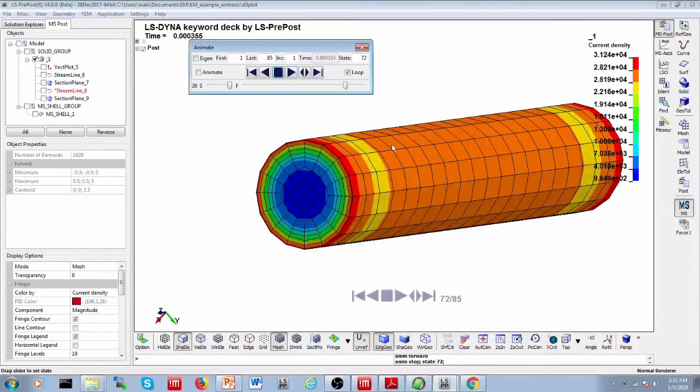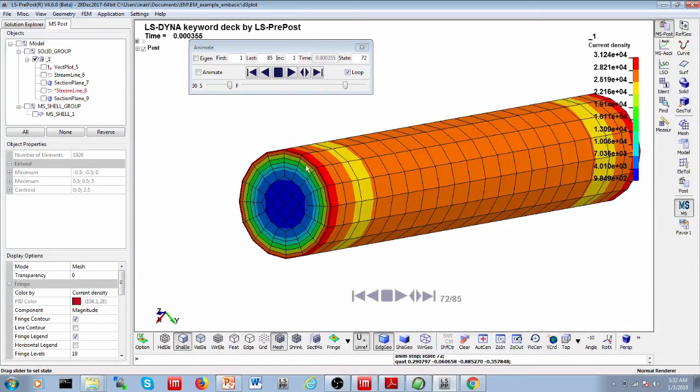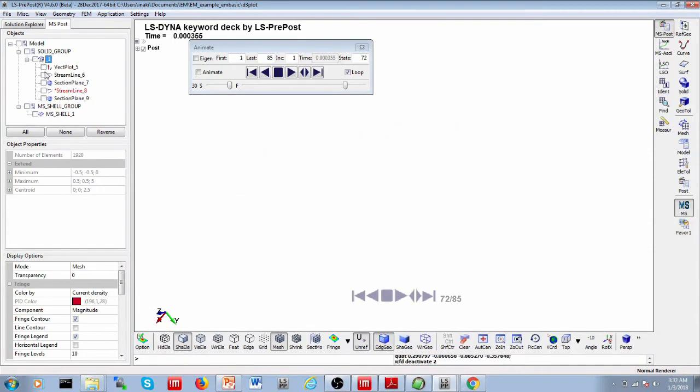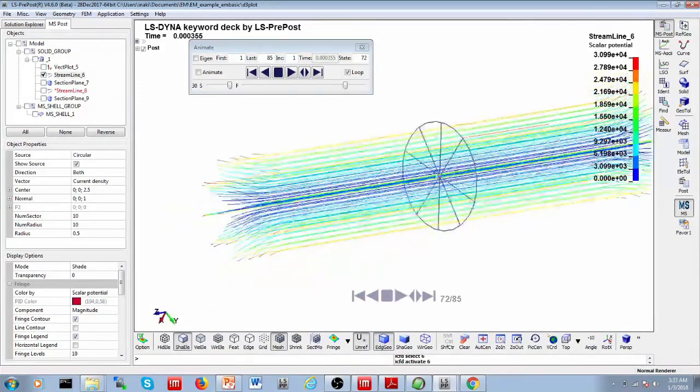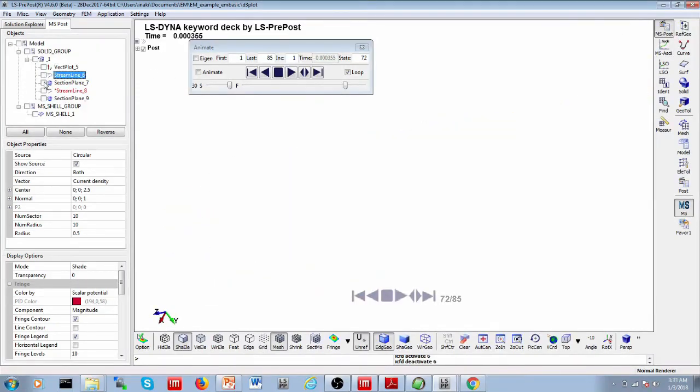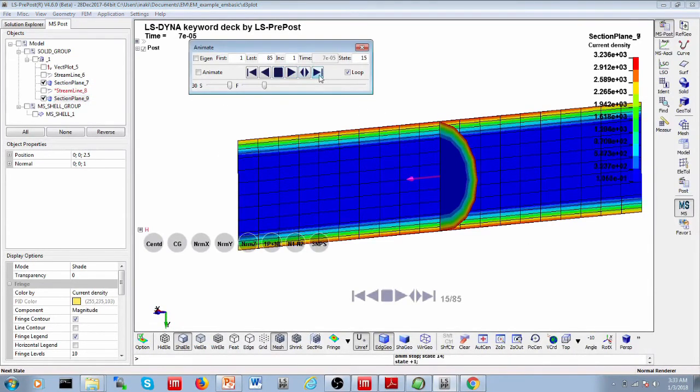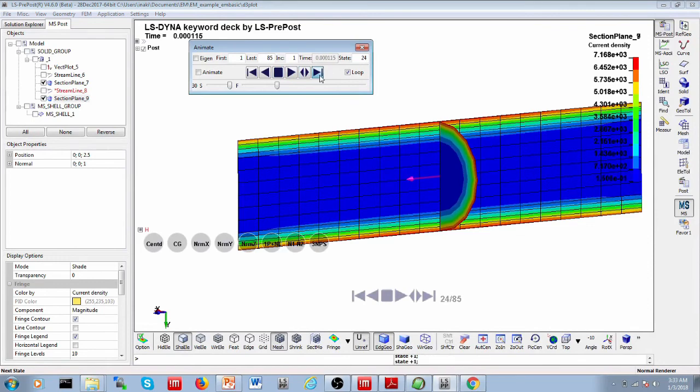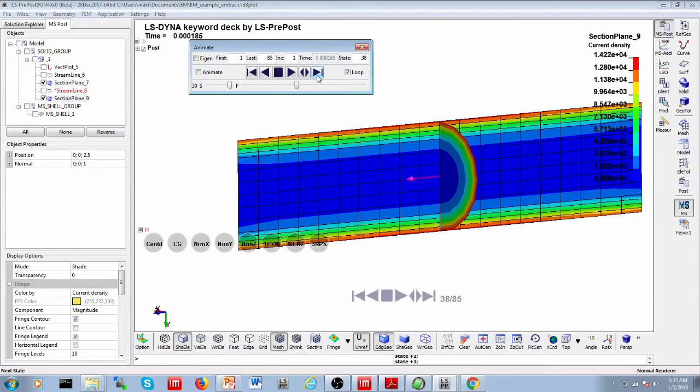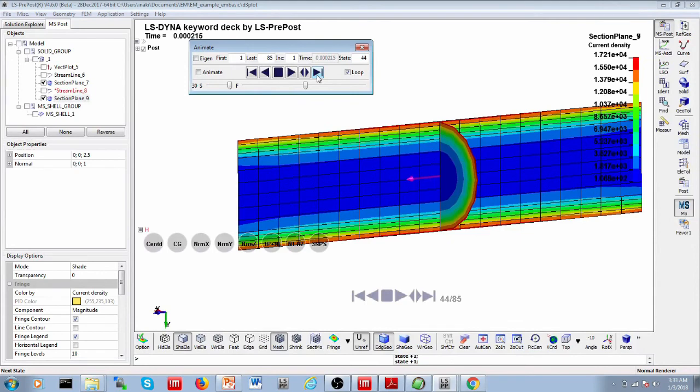It's even clearer if you display section planes and display their current density, you definitely see that it's higher on the surface than through the thickness. This is a fundamental and basic property of the eddy currents. And this is what we need for metal forming. But we'll describe this in more details in the next video.